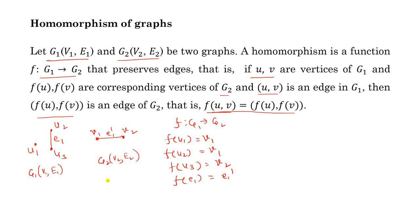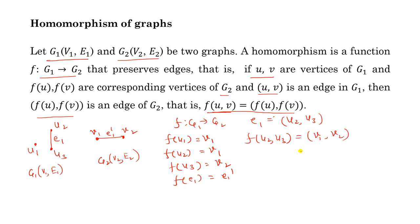There is only one edge in graph g1. Edge e1 can be written as (u2, u3). We will check whether the homomorphism condition is satisfied. We know that f(e1) = e1 dash, so f(u2, u3) = e1 dash. And e1 dash can be written as (v1, v2).